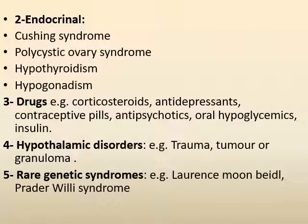The second cause is secondary obesity, which includes endocrinal disorders, drugs, hypothalamic disorders, and rare genetic syndromes. The endocrinal causes of obesity include Cushing's syndrome, polycystic ovary syndrome, hypothyroidism and hypogonadism.